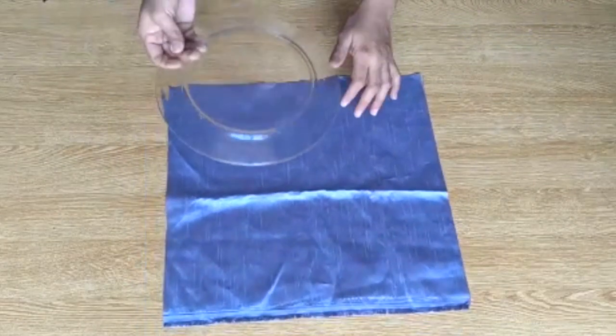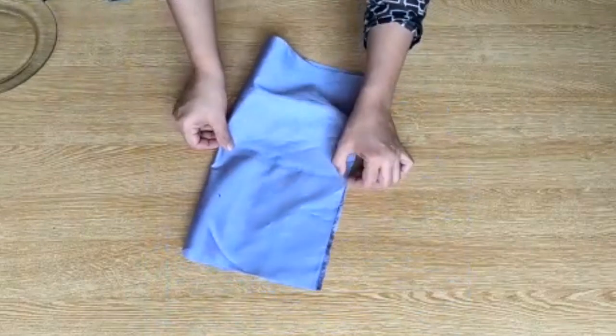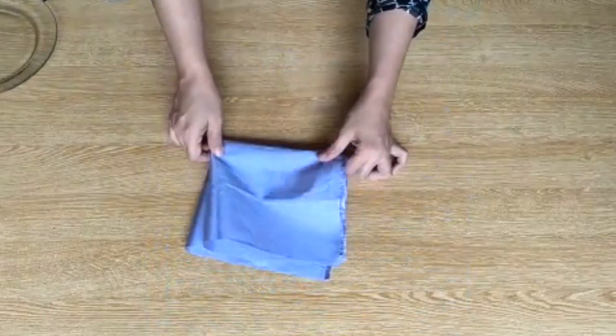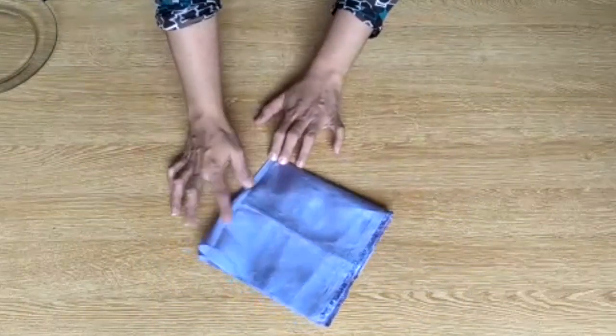So friends, first of all, I will tell you, it is the front side of the cushion. First fold it and see where the middle main point is. You have to see which one is the middle.